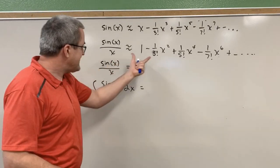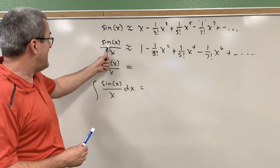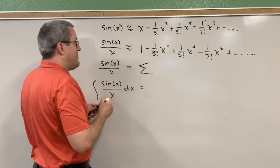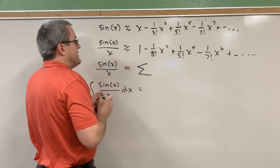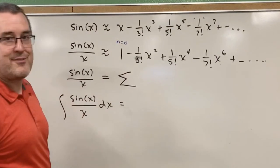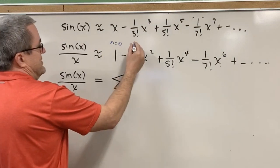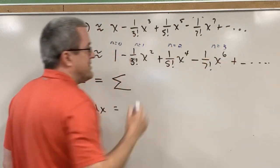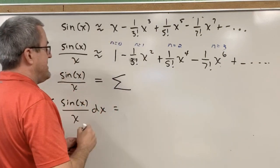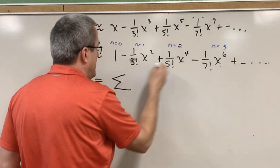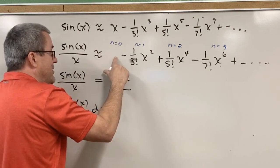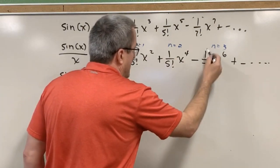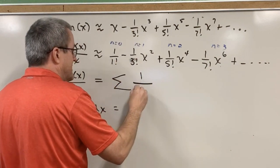Now let's express sine of X over X as an infinite Taylor series — that is, as a sum. Let's start counting at zero. The zeroth term, first term, second term, third term, and so on. Notice that each term has a coefficient. Here it's one, which you can think of as one over one factorial. Then one over three factorial, one over five factorial, one over seven factorial. So it's always one over something factorial.